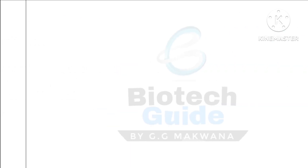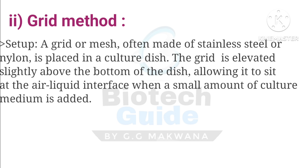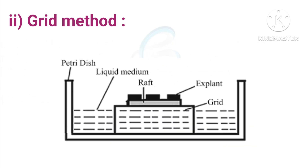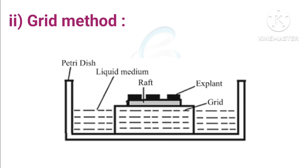The second sub-method is the grid method. In this method, a grid or mesh made of stainless steel or nylon is placed in a culture dish, elevated slightly above the bottom of the dish. This allows an air-liquid interface when a small amount of culture medium is added. Above the grid, the tissue or explant is placed, and between the grid and the culture medium there is a space forming the air-liquid interface.